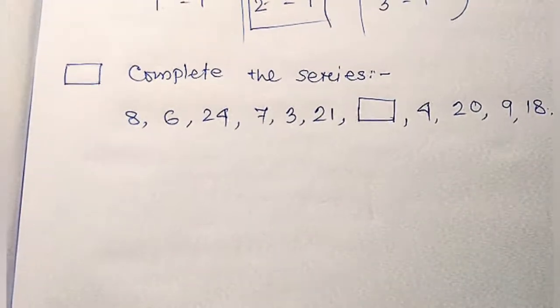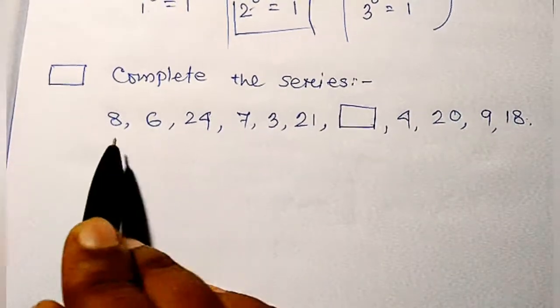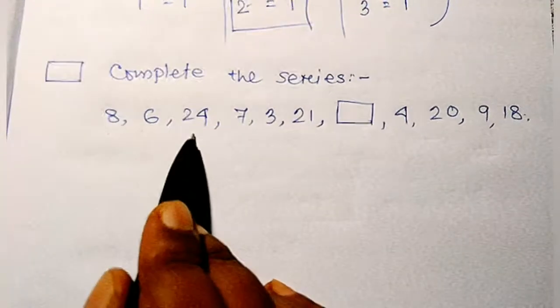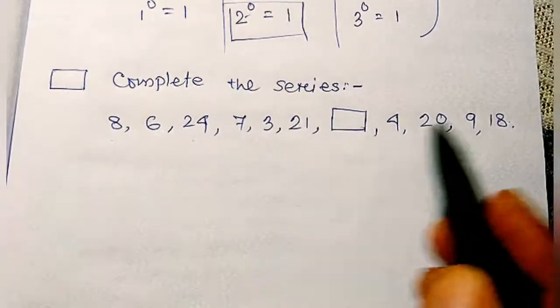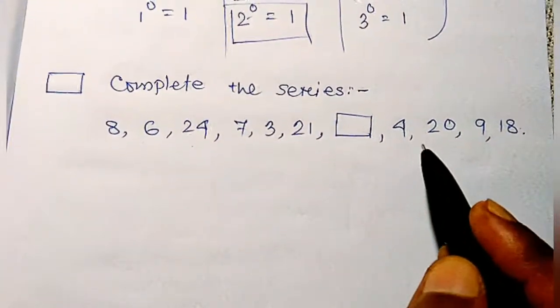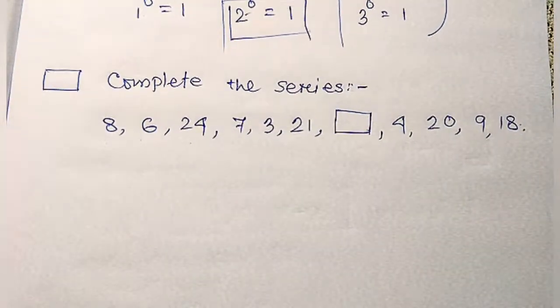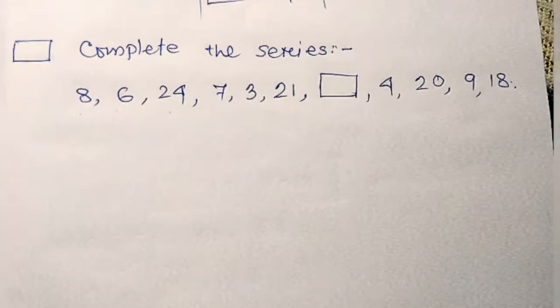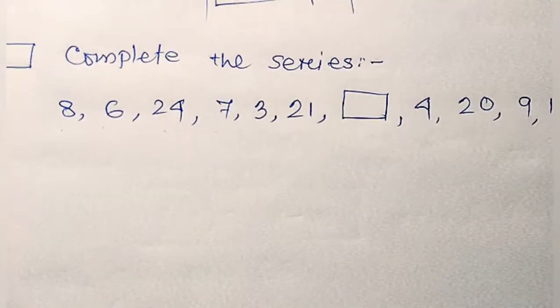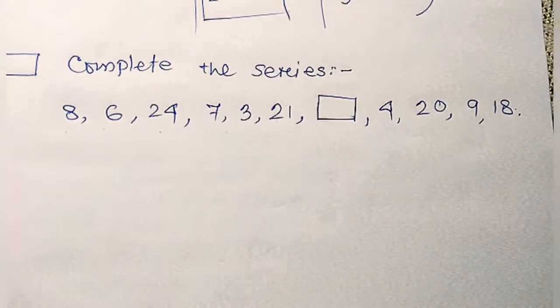In this problem, the series is like this: 8, 6, 24, and 7, 3, then 21, and a gap, then 4 and 20, 9, 18. So look at the series very carefully and see that the series...